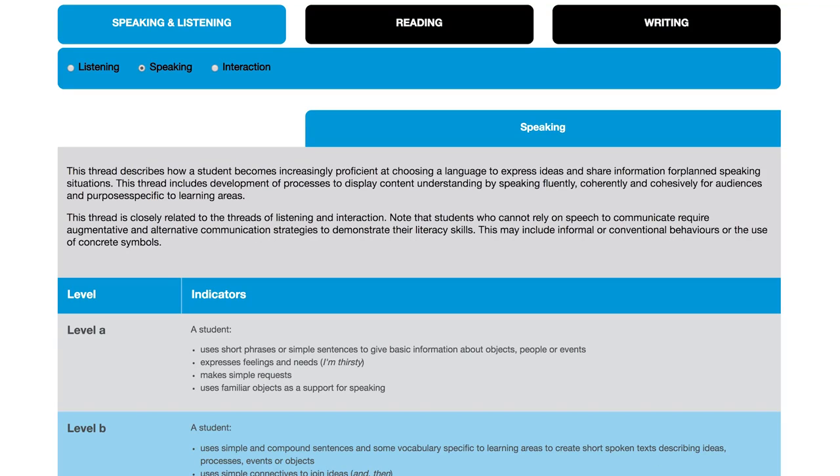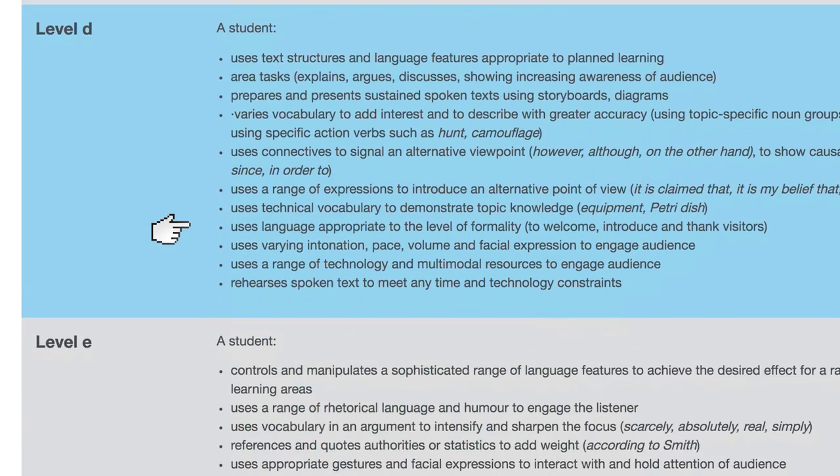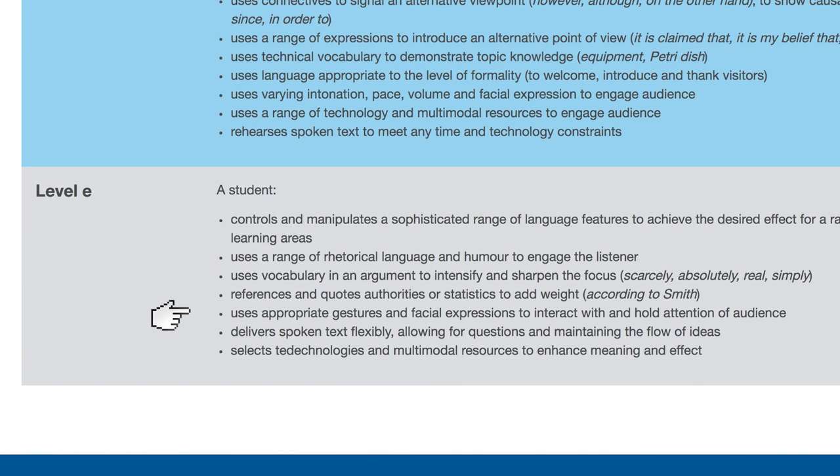What do you need to do first? Firstly, familiarise yourself with the progression. You may like to print the PDF version. It is important that you take some time to become familiar with the structure, form and indicators of the progression. A good starting point would be to look at the beginning and end points of the thread to get an understanding of the range. For example, the speaking thread begins with making simple requests and expressing feelings and short phrases, and finishes with confidently and critically evaluating ideas. When you have scanned the whole thread, you may wish to pay close attention to the levels where you think your students are most likely to be located.